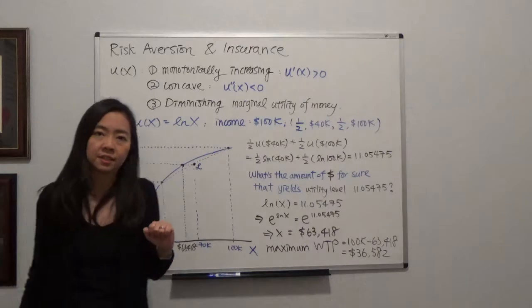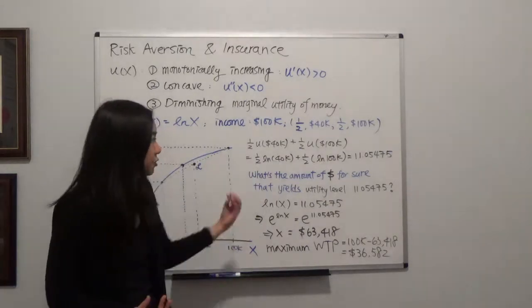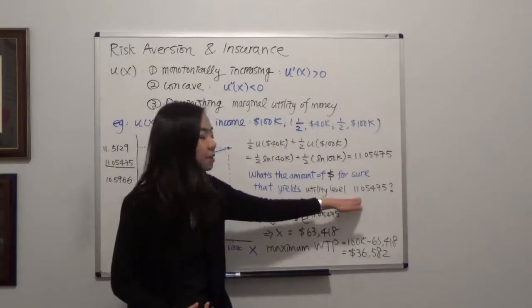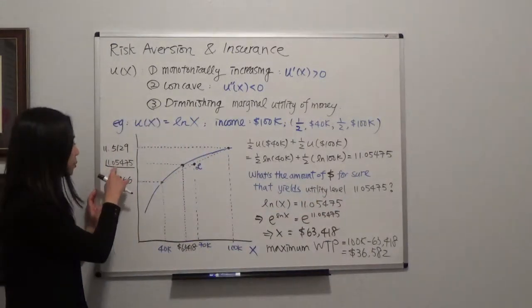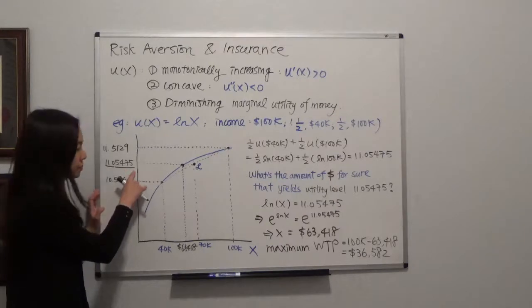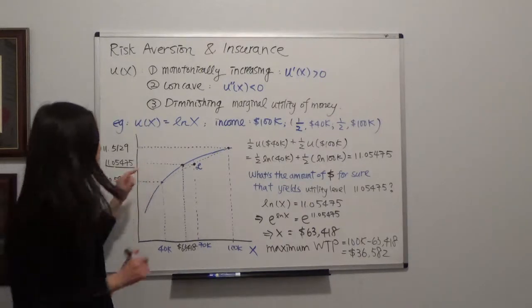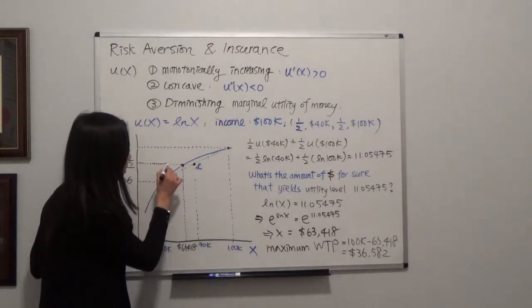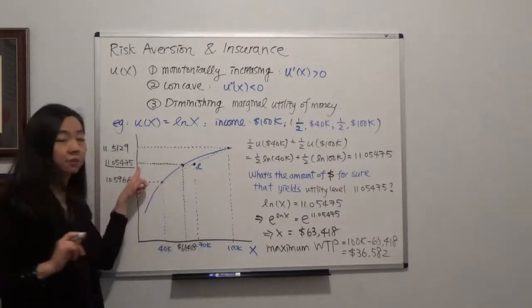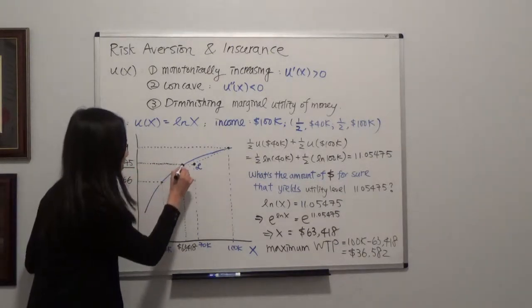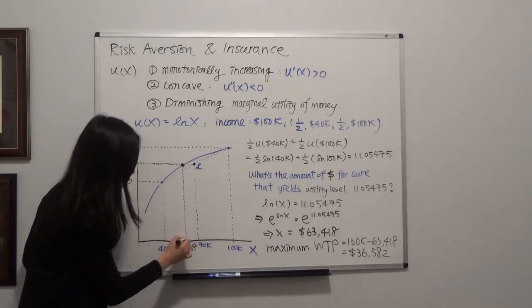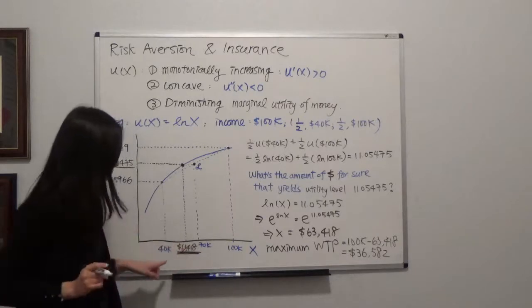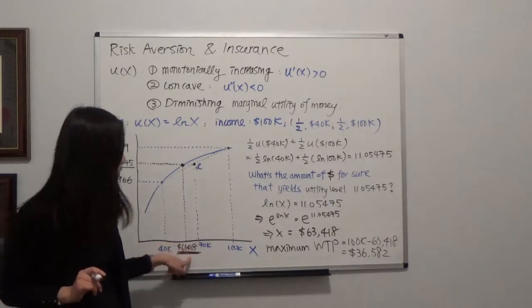So my question is, what is the amount of money for sure in your pocket that yields that level of utility, the utility that is 11.05475? So graphically, you'll be able to find it. So the utility level is here. And what is the amount of money that will give you that level of utility? So that will be here. And you go down and look, you'll be able to calculate the amount of money is exactly $63,418.